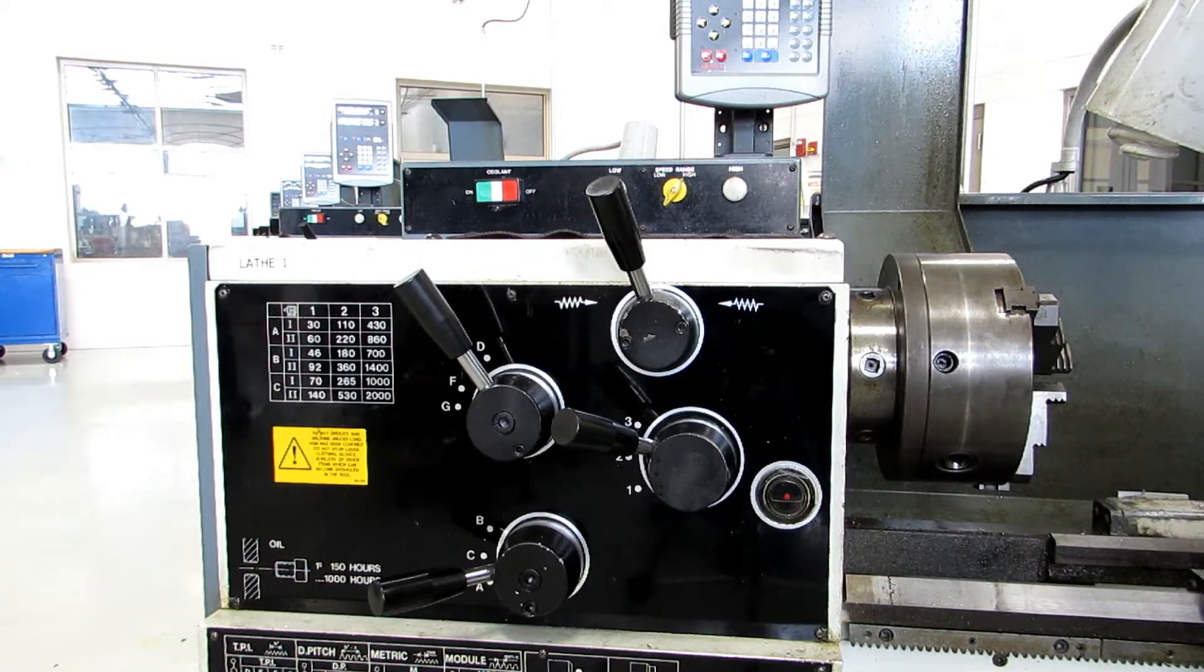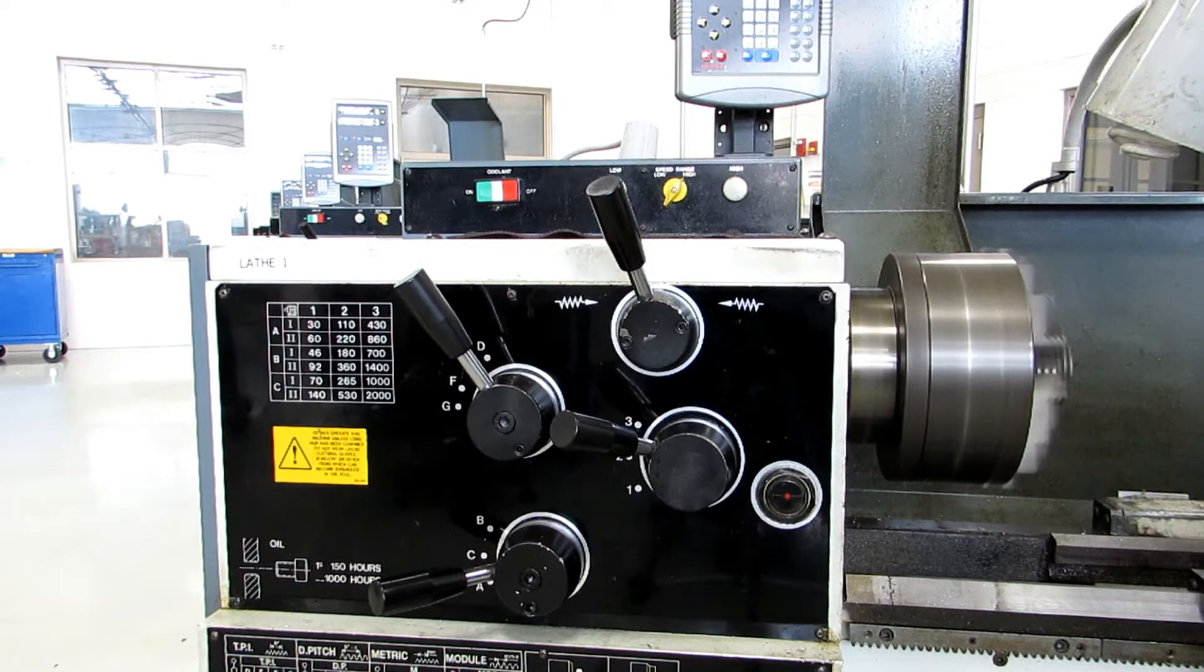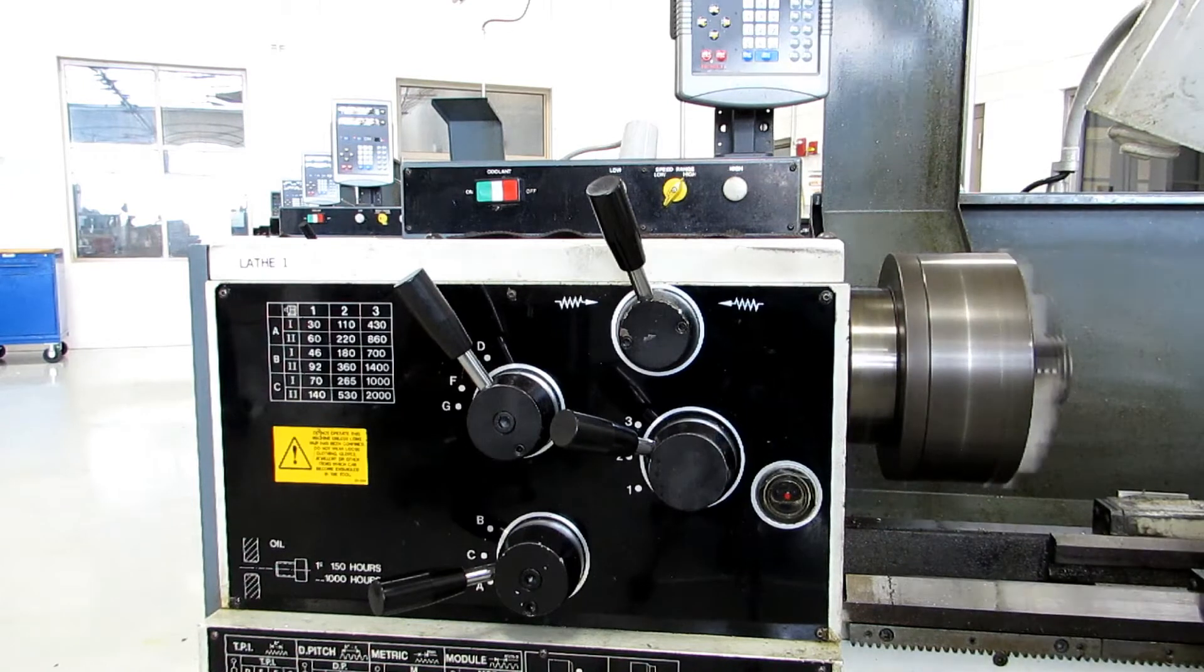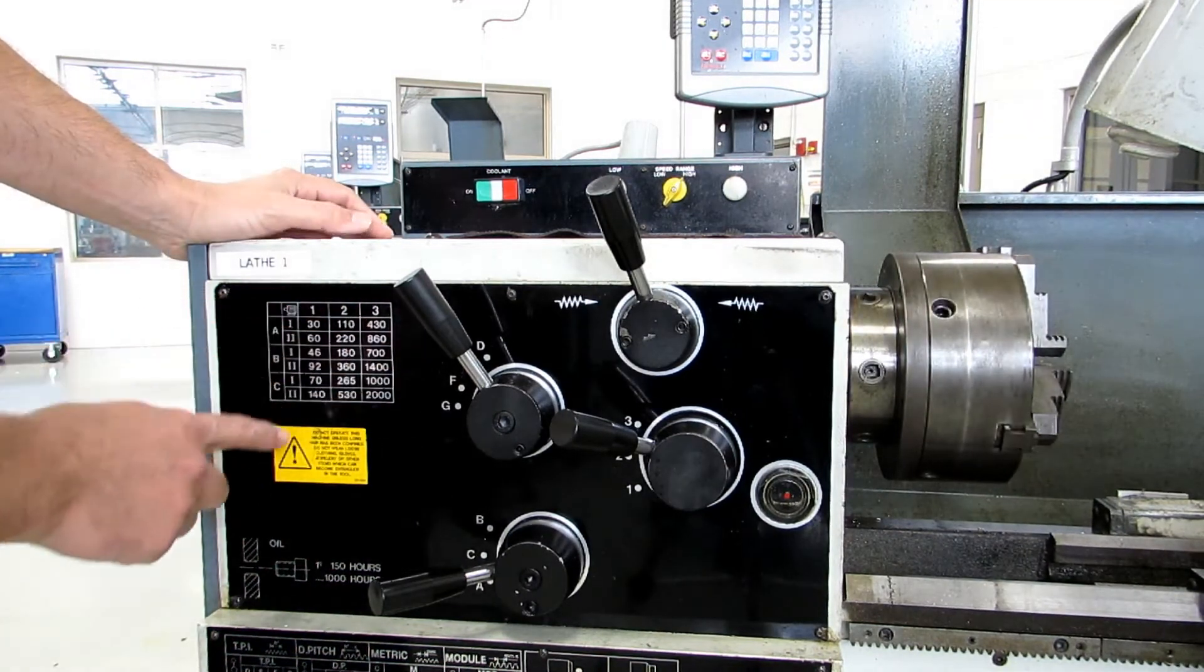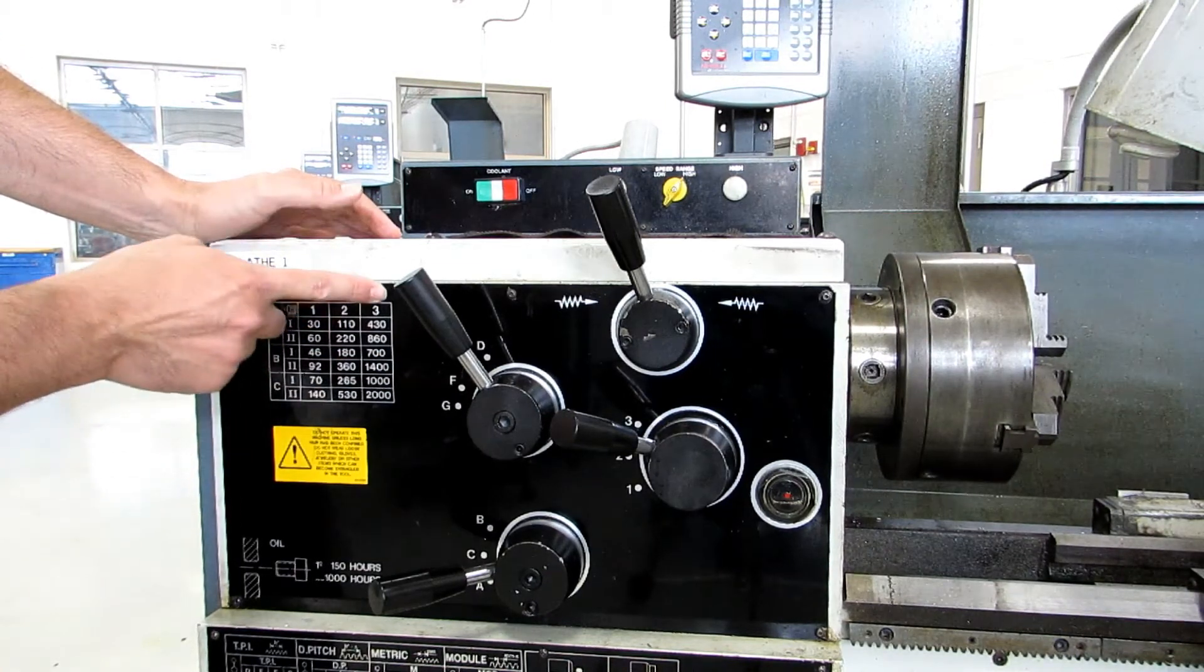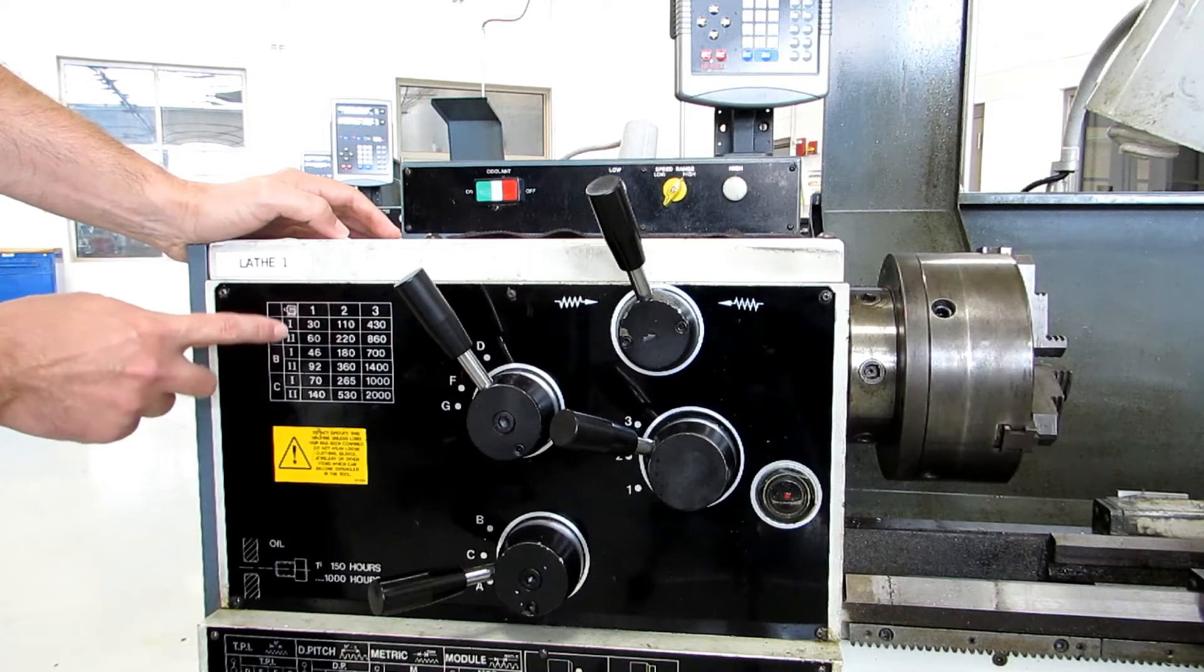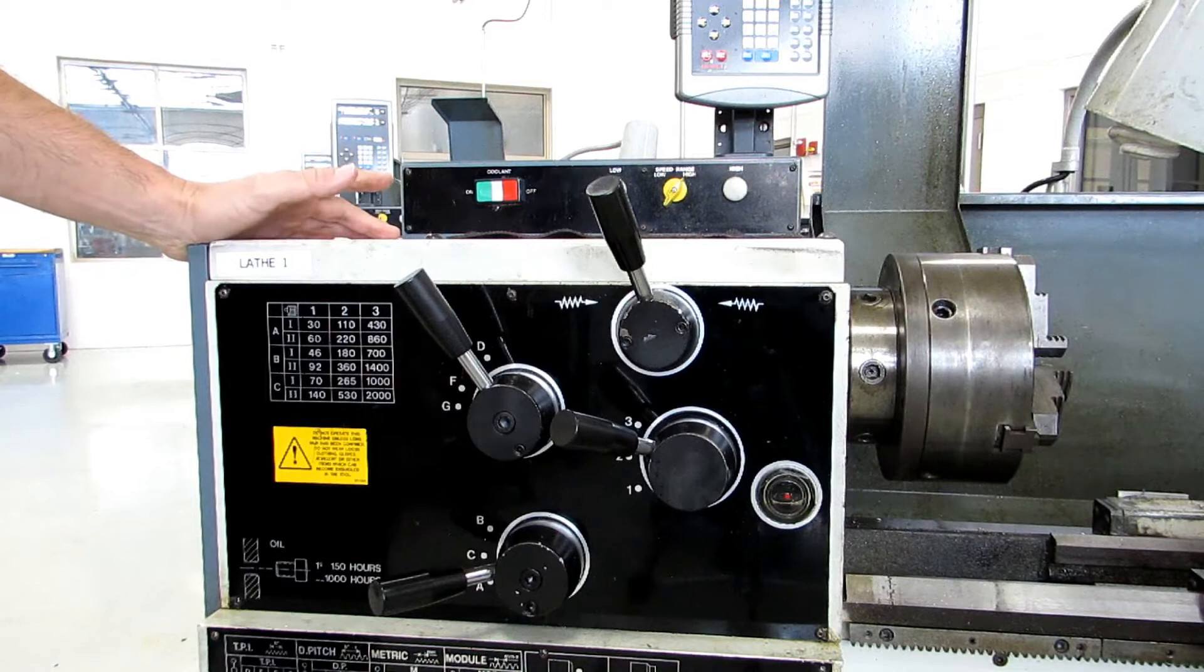So you can use that technique to find any speed on here. Just make sure that you're in the right ABC location and 123 location and pay special attention to Roman numerals 1 and 2, which again is low and high.